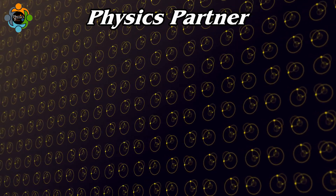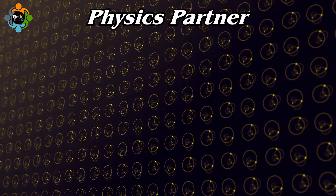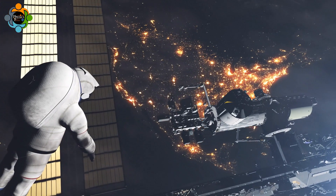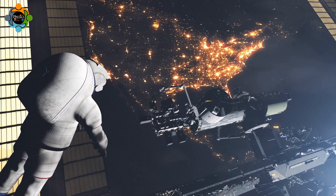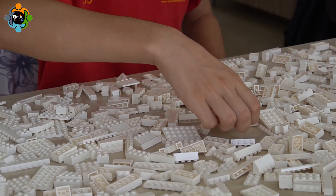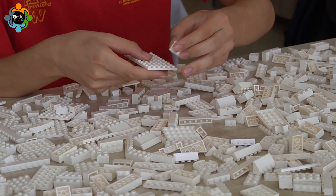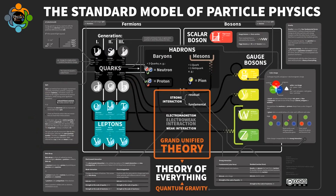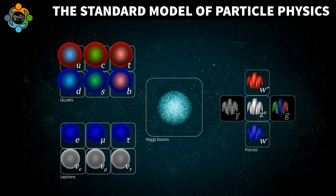Hello and welcome back to another episode of Physics Partner. Imagine if everything in the universe — from the stars in the sky to the device you are watching this on — was made up of just 17 tiny Lego pieces. Sounds impossible, right? Well, that's essentially what the standard model of particle physics tells us. It's the most important and successful scientific theory you've probably never heard of, and today we are going to break it down for you.